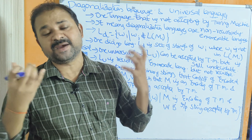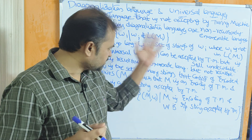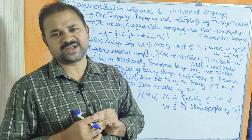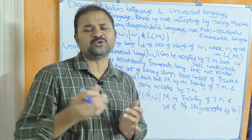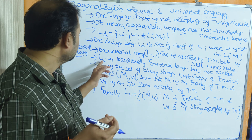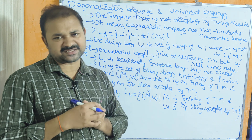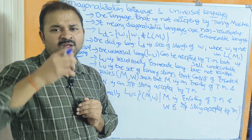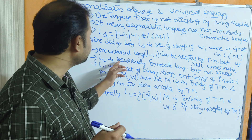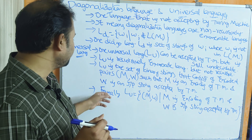The Turing machine accepts recursively enumerable languages, and likewise it can also accept the universal language, but it is still undecidable. For some problems it is not possible to write an algorithm or implement a Turing machine program. Universal language L_U is a recursively enumerable language but it is not a recursive language.